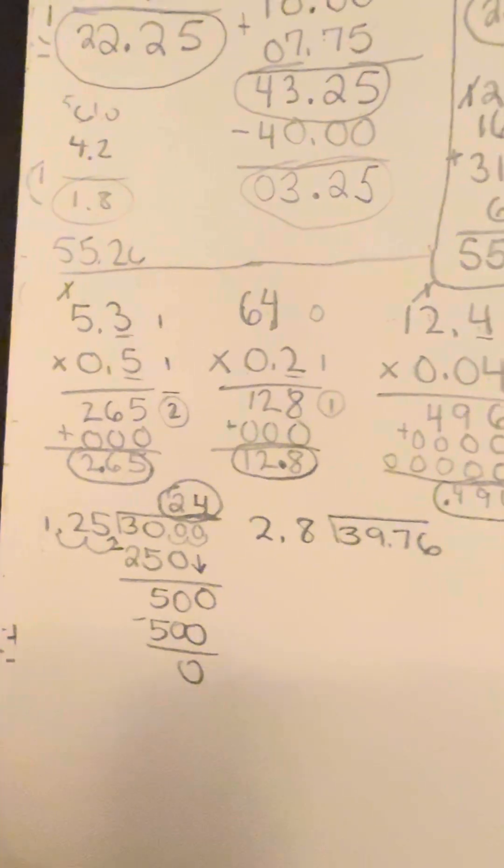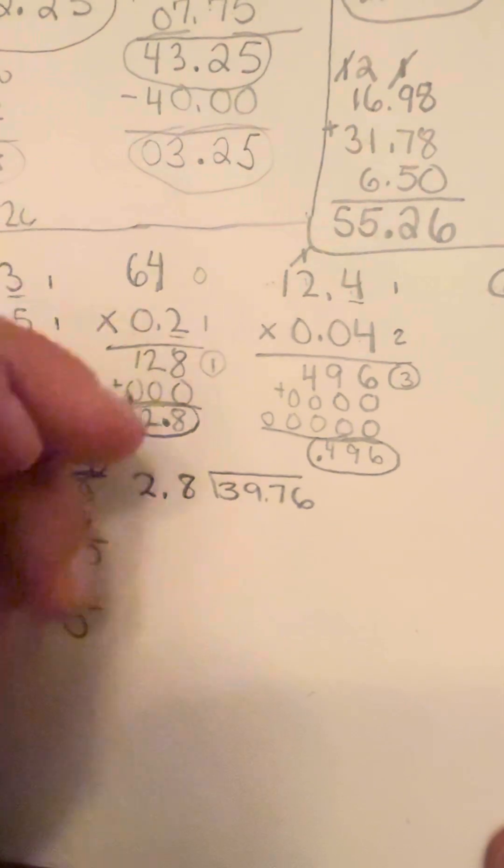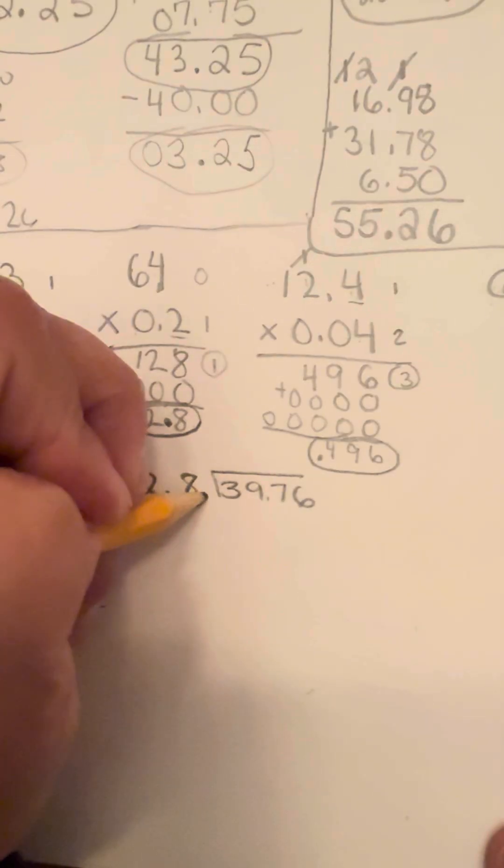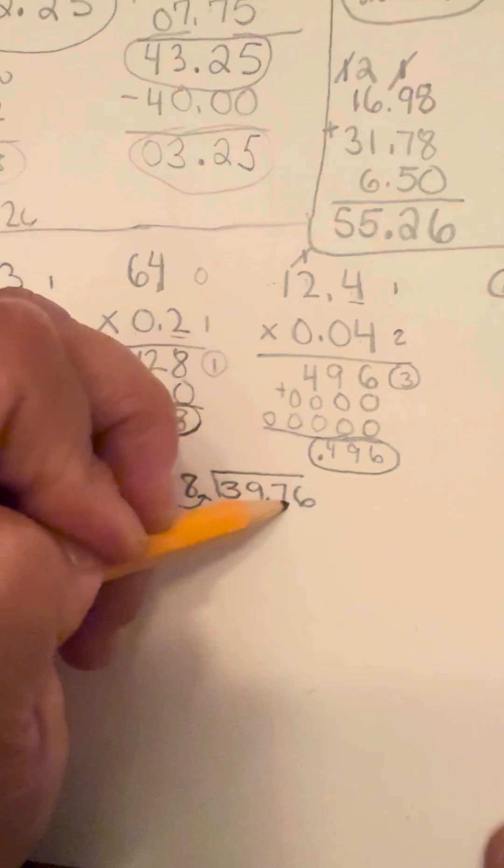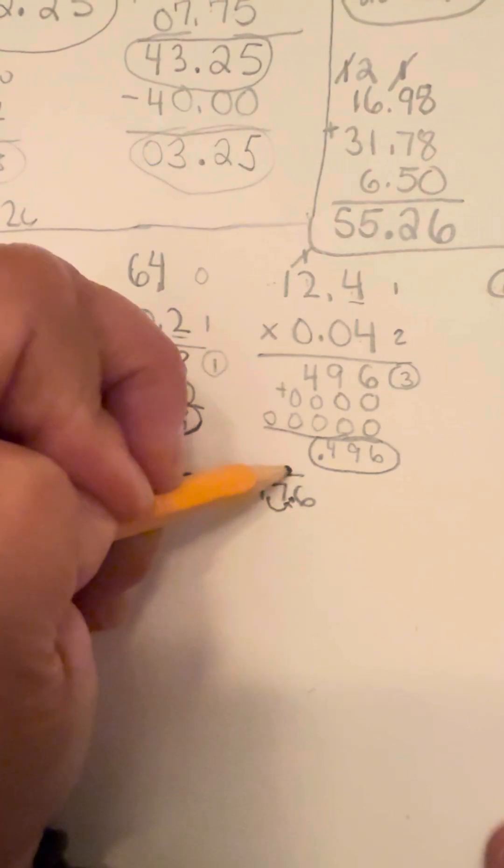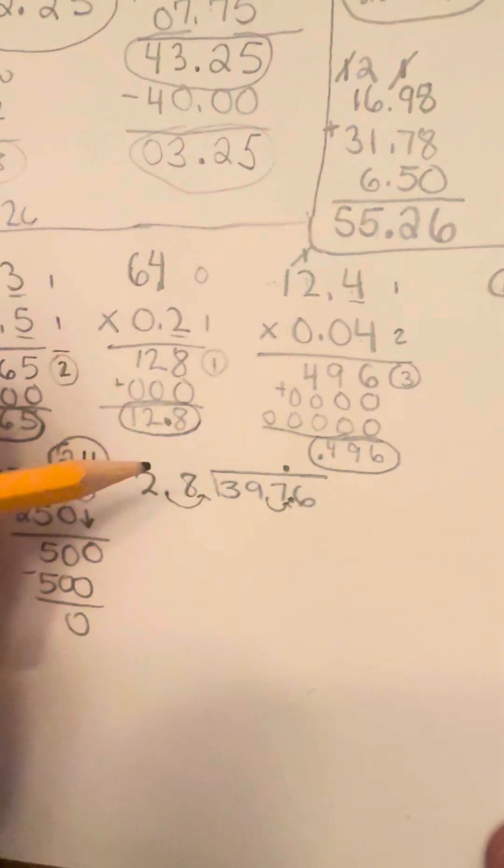And then for this last one, we're going to do that. So you can see there is a decimal in both numbers. So we just have to move this decimal over one place to the right. So we're going to make this move one place to the right. And that's where the decimal is going to be. I'm going to put it up here so you can see it.